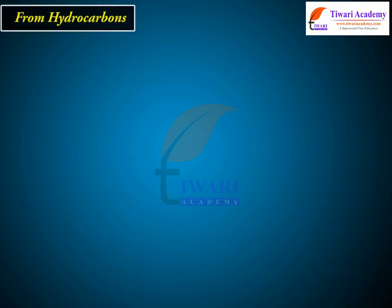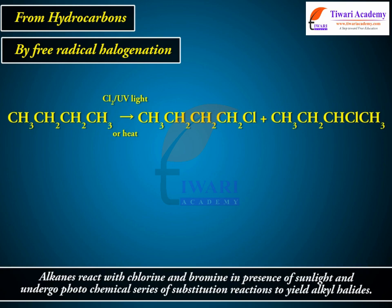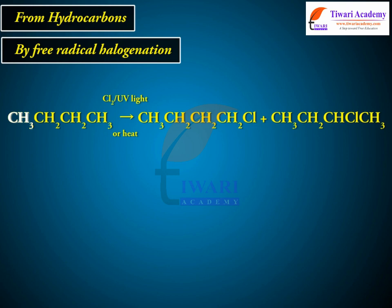From hydrocarbons, by free radical halogenation: alkanes react with chlorine and bromine in the presence of sunlight and undergo a photochemical series of substitution reactions to yield alkyl halides. For example, CH3CH2CH2CH2CH3 in the presence of Cl2 and UV light or heat gives CH3CH2CH2CH2Cl plus CH3CH2CHClCH3.